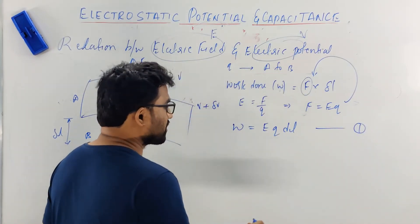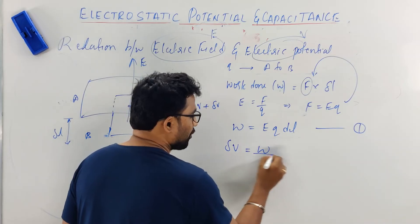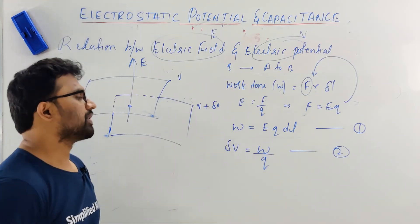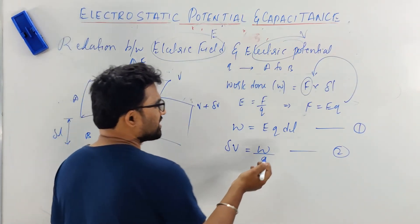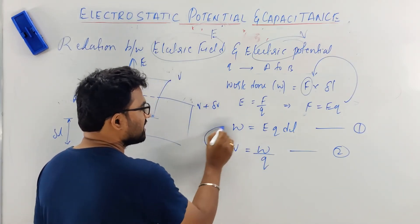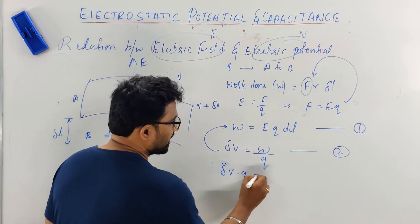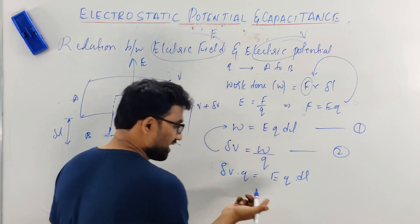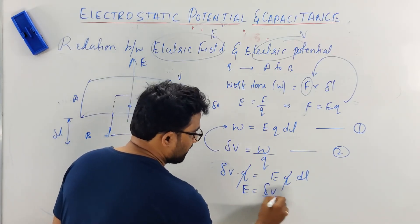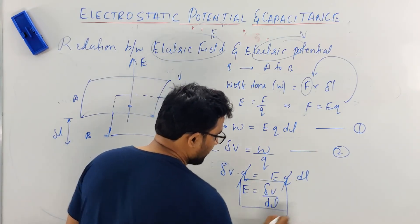We also know that potential equals work done divided by quantity of charge moved. So W = Q × delta V. Now substitute: delta V × Q = E × Q × dL. Q and Q cancel. So E = dV/dL. That is the relation between electric field and electric potential.